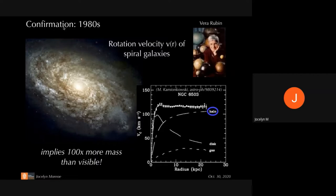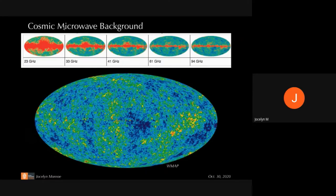These kinds of measurements imply there's a factor of 100 times more mass interacting gravitationally than is visible. What we know today about how much dark matter there is in the universe comes from measurements of the cosmic microwave background. Our model of the evolution of the universe is that it started with a Big Bang, and then the universe expanded and cooled. We can see the photons left over from that Big Bang — that's called the cosmic microwave background radiation.